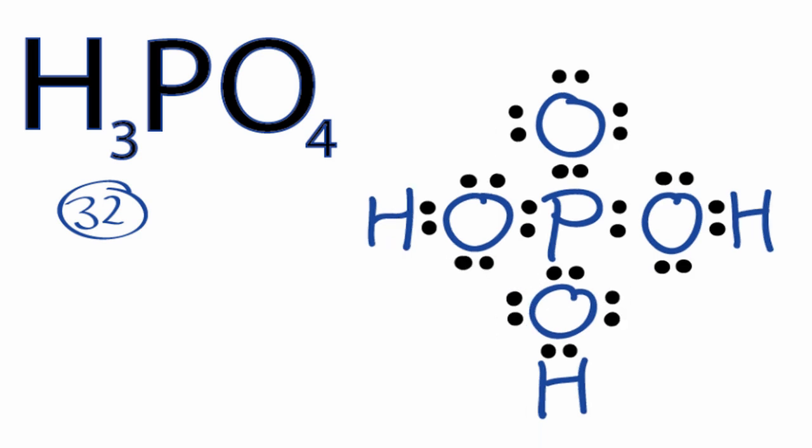If you look closely, you can see that each of the atoms has a full outer shell. The hydrogens each have 2 valence electrons, and the oxygens and phosphorus each have 8 valence electrons around them. We've also used all 32 of our valence electrons, so this looks like a pretty good Lewis structure.